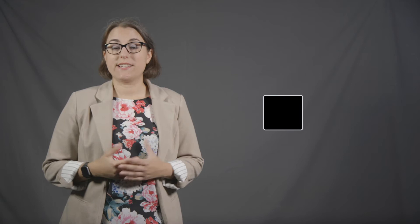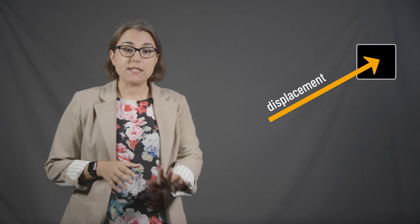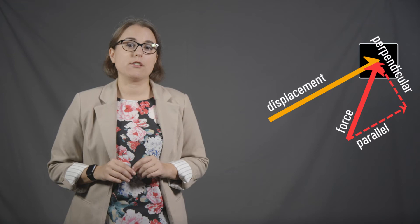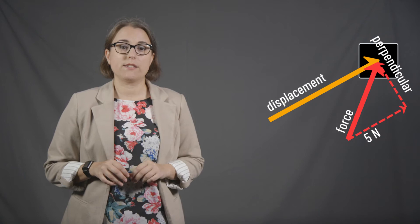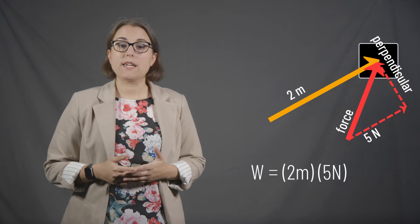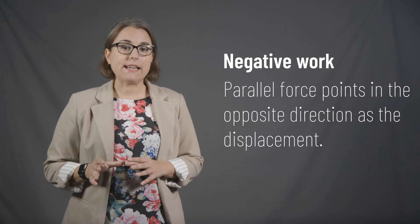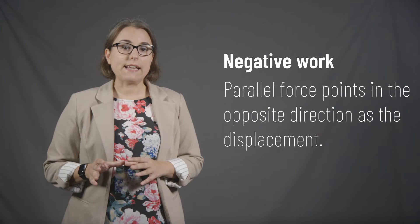In another example, if a box is moving in the direction of the displacement vector and a force is applied at an angle, the force vector is split into parallel and perpendicular components. If the force has 5 newtons of parallel component and moves the box 2 meters, then 10 joules of work was done on the box. While work is a scalar quantity with no direction, it is still possible to do positive or negative work. Positive work means the parallel force points in the same direction as the displacement; negative work means it points in the opposite direction.